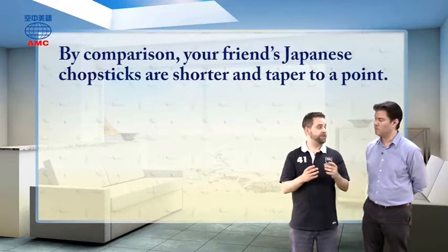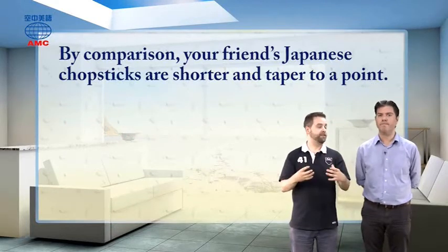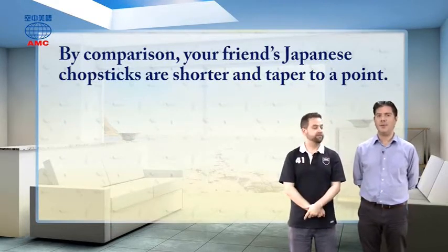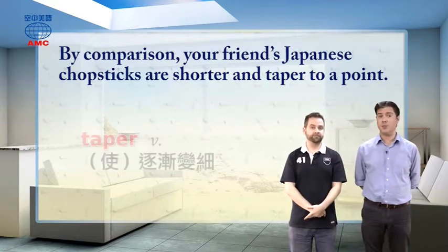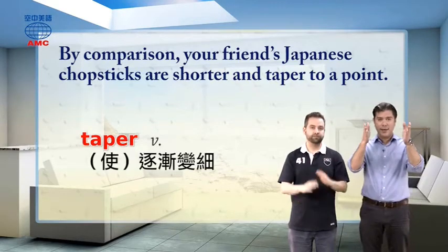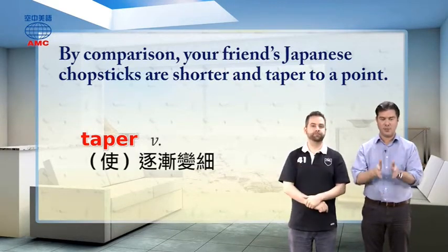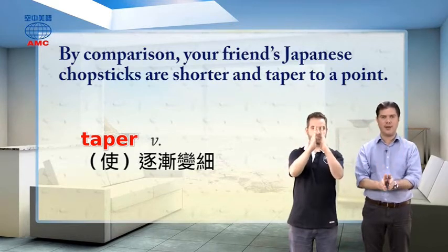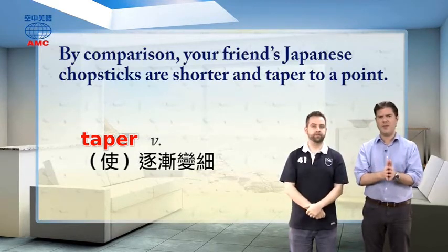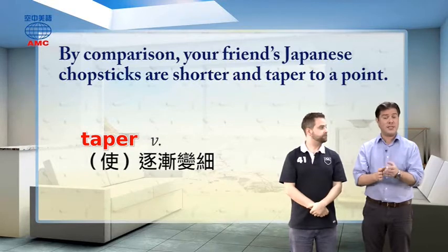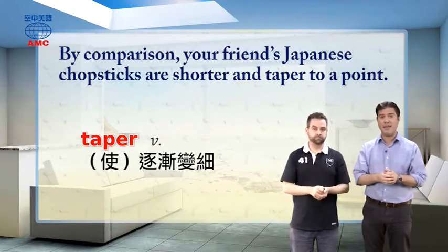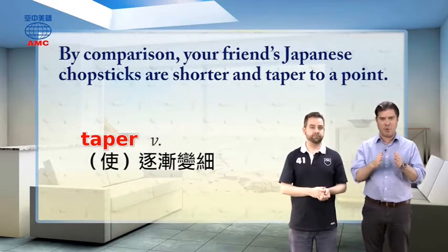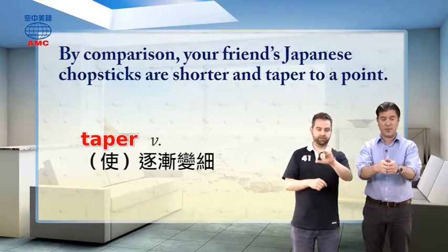The Korean chopsticks are flat, but by comparison the Japanese ones taper to a point. When something tapers, this verb means it goes from wide to narrow — from a wide size to a narrow size. When things taper, we often think of the tip of a pen, the point of a knife or a sword. It goes from a wide width down to a narrow width.